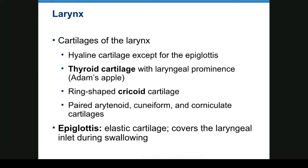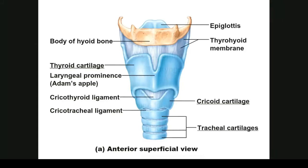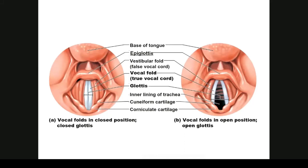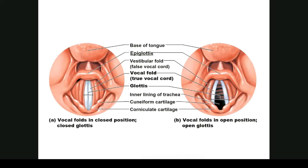We have cartilages of the larynx. This is the thyroid cartilage, also known as the Adam's apple. This is the cricoid cartilage, and these are your tracheal cartilages. Here's your epiglottis and hyoid bone. This is your glottis in a closed position and in an open position; the vocal folds are within this area. When one speaks, air is sent across those vocal folds, which stretch or relax to make different sounds.